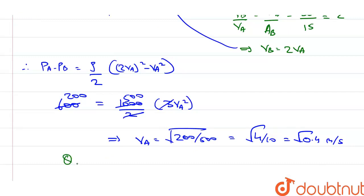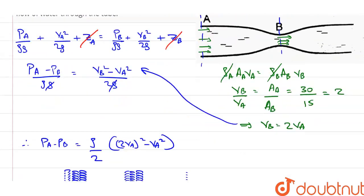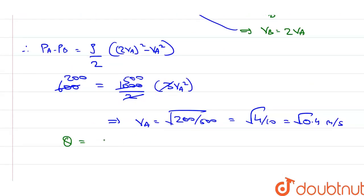The rate of flow - let's consider section A. So, the rate of flow at section A is A_A into V_A, which is equal to